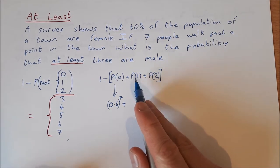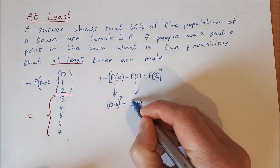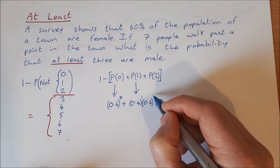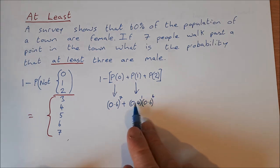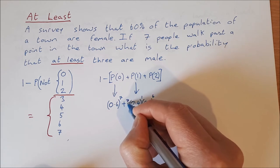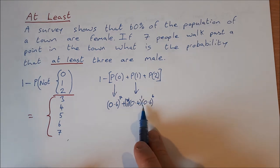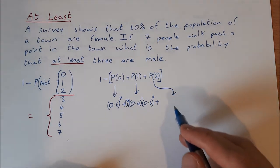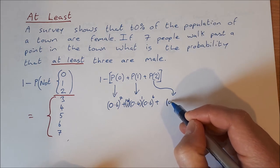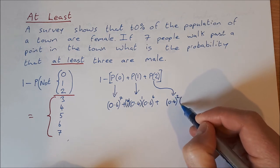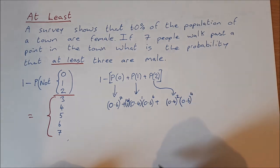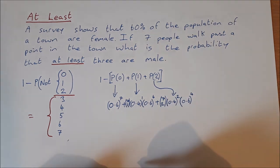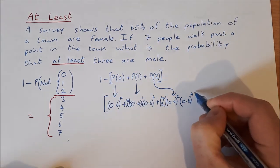For the probability of getting one male: the probability of a male is 0.4 to the power of 1, the probability of a female is 0.6 to the power of 6, and this can happen 7 choose 1 ways. For two males: probability of male is 0.4 to the power of 2, probability of female is 0.6 to the power of 4 — there are 6 remaining females — and this happens 7 choose 2 ways.